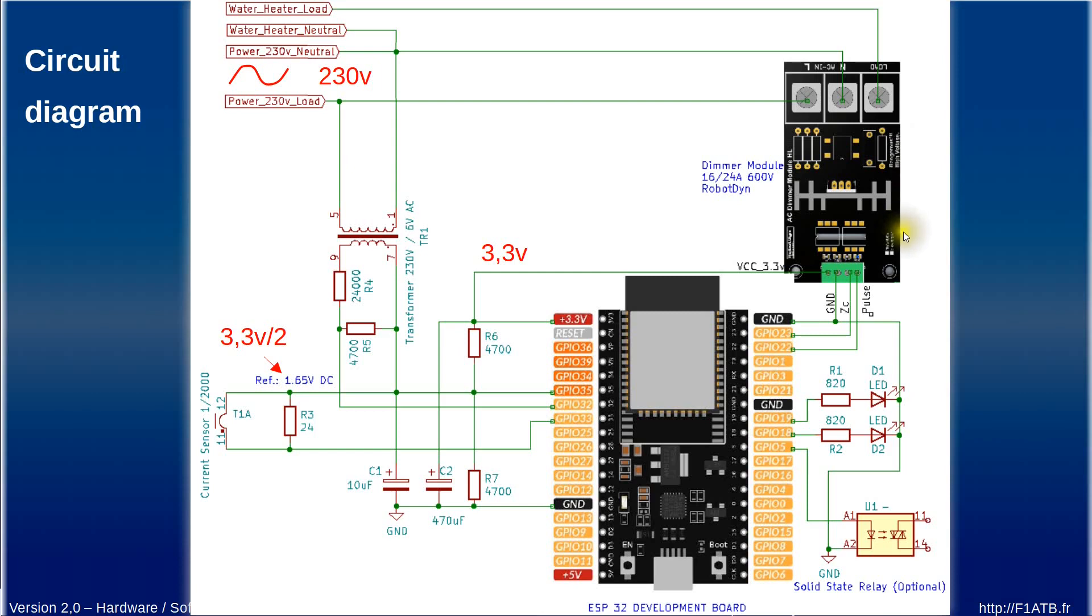and this dimmer also produces an interesting signal called zero crossing each time the voltage on the 230 volts passes by zero we have the signal here on zero crossing pin. This signal will help us to have a perfect synchronization of all the process